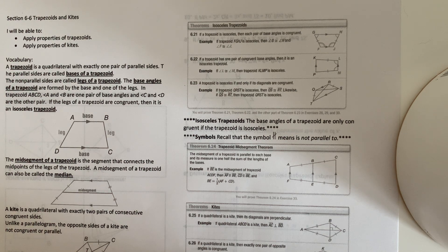If the legs of a trapezoid are congruent, then it is an isosceles trapezoid. The mid-segment of a trapezoid is the segment that connects the midpoints of the legs of the trapezoid. A mid-segment of a trapezoid can also be called a median.